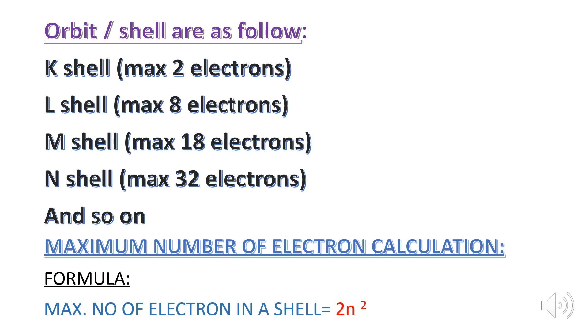K shell can accommodate a maximum of 2 electrons, L shell can accommodate 8 electrons, M shell can accommodate 18 electrons and the N shell 32 electrons. We can calculate the maximum number of electrons in any shell by using the formula 2n square.